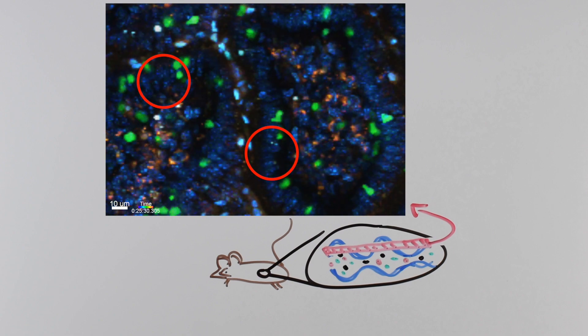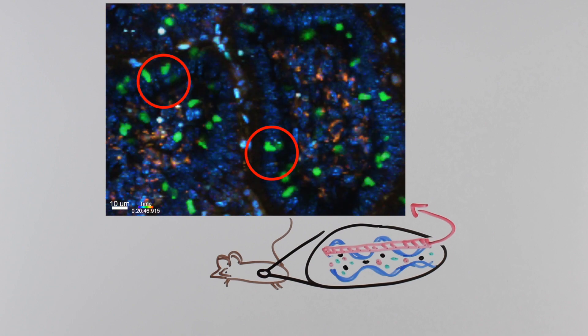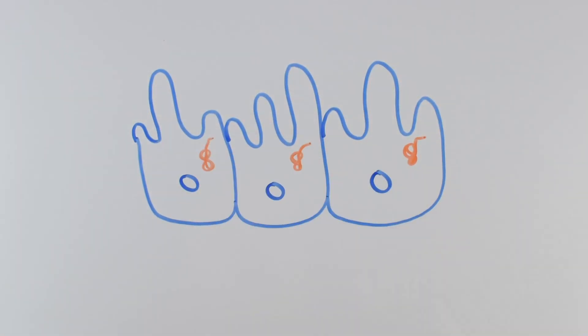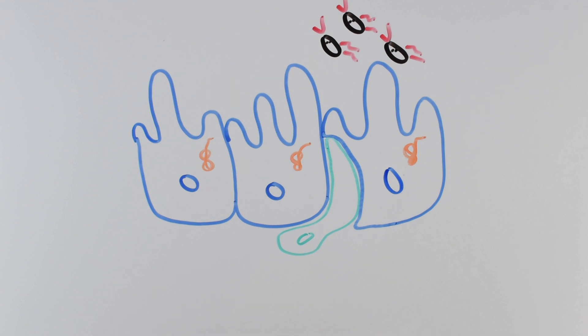The researchers called this behavior flossing. Yeah, like what you do with your teeth. They saw that the flossing happened more frequently at places in the gut with more pathogens. When the researchers removed bacteria sensing with MyD88, the IEL flossing behavior stopped too.